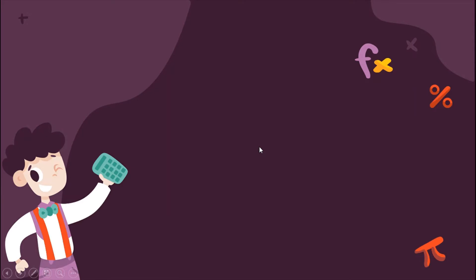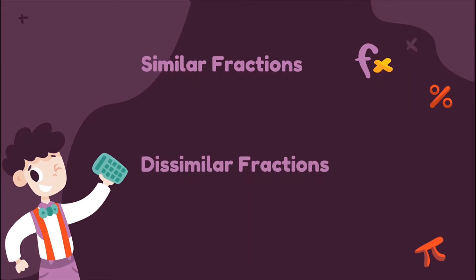We can also group fractions according to similar fractions and dissimilar fractions. When we say similar fractions, these are fractions wherein they have the same denominator. Like for example, we have two-fifths, three-fifths, and four-fifths. So when we say similar fractions, these are fractions wherein they have exactly the same denominators.